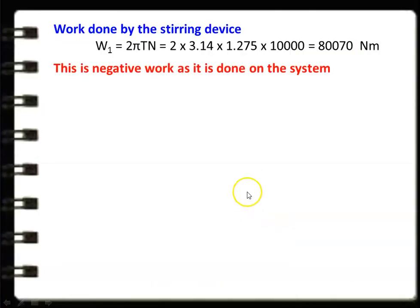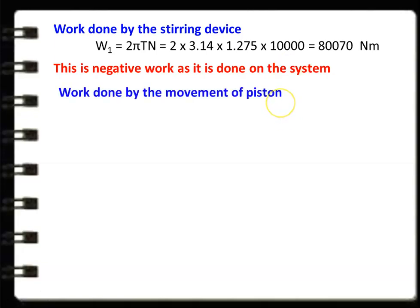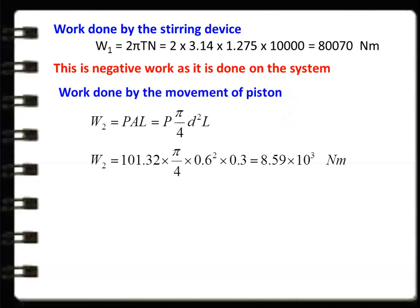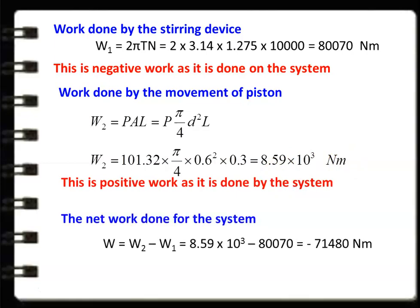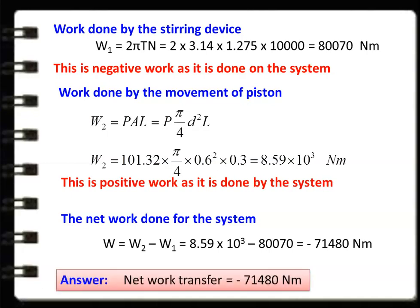Work done by the stirring device: W1 = 2πTN = 2 × 3.14 × 1.275 × 10,000 = 80,070 Nm. This is again negative work, as work is done on the stirring device. Work done by the movement of the piston: W2 = P × (π/4) × D² × L = 101.32 × (π/4) × 0.6² × 0.3 = 8,590 Nm. This is positive work, as it is done by the piston. Net work done = W2 − W1 = 8,590 − 80,070 = −71,480 Nm.